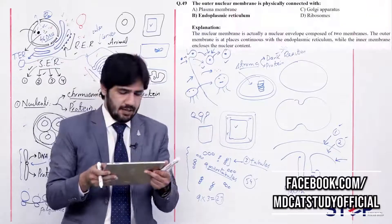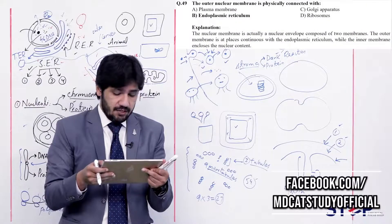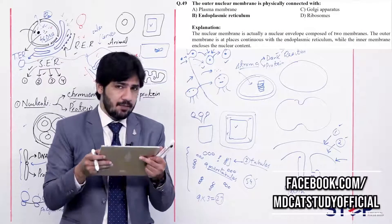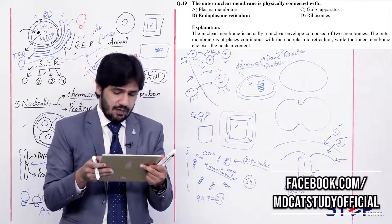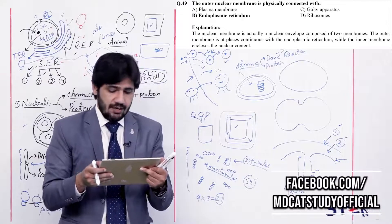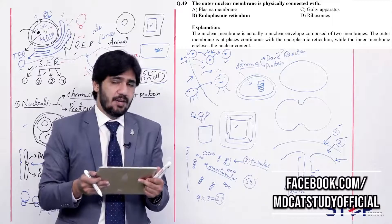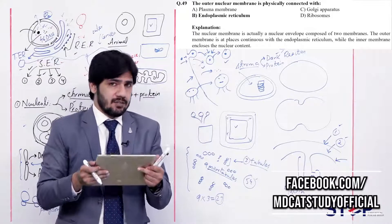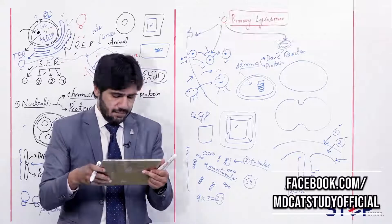Question 49: The outer nuclear membrane is physically connected with (alpha) plasma membrane, (beta) endoplasmic reticulum, (charlie) Golgi apparatus, (delta) ribosomes. The outer membrane of the nucleus is connected with the endoplasmic reticulum. So the right answer is beta — endoplasmic reticulum.